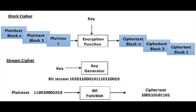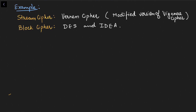In the general diagram of block cipher and stream cipher: in block cipher, each plain text block passes through encryption with a key to produce a cipher text block of the same length. In stream cipher, a key generator produces a key bit stream, the plain text is converted to bits, encryption applies XOR, and we get the cipher text. Examples of stream cipher include the Vernam cipher, a modified version of the Vigenère cipher — a case of polyalphabetic cipher. For block cipher, examples include DES and IDEA algorithms.